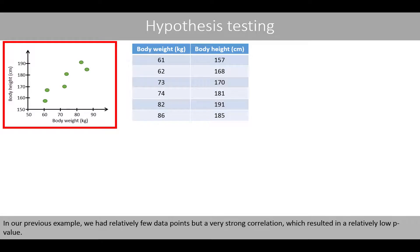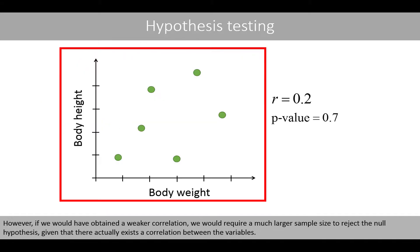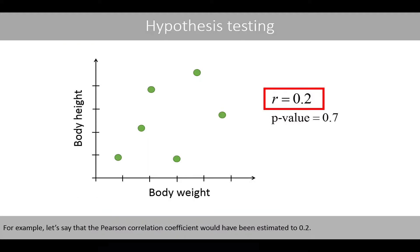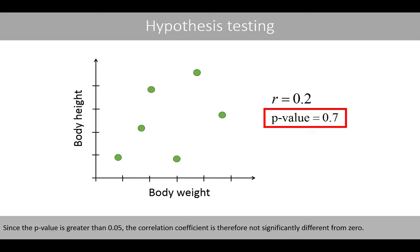In our previous example, we had relatively few data points but a very strong correlation, which resulted in a relatively low p-value. However, if we had obtained a weaker correlation, we would require a much larger sample size to reject the null hypothesis, given that a correlation actually exists between the variables. For example, if the Pearson correlation coefficient had been estimated to 0.2, the p-value would be greater than 0.05, and the correlation coefficient would therefore not be significantly different from 0.